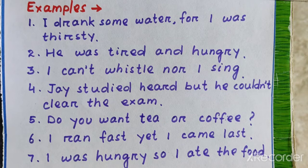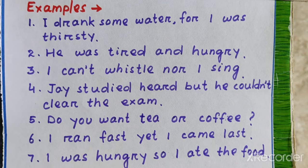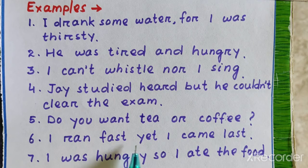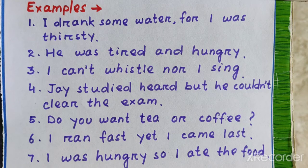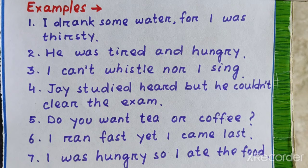'Joy studied hard but he couldn't clear the exam.' Here, 'but' is the conjunction. 'Do you want tea or coffee?' Here, 'or' is used to offer two choices: tea or coffee. 'I ran first, yet I came last.' Here, 'yet' conveys that even running very fast, I could not get a good position. 'I was hungry, so I ate food.' Here, 'so' conveys that as I was hungry, I had to eat food.